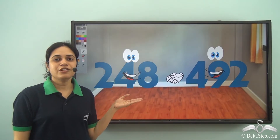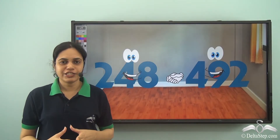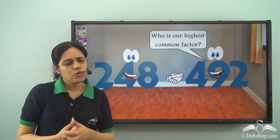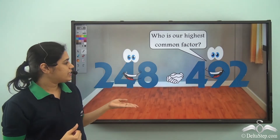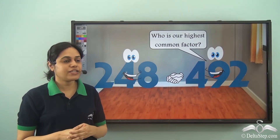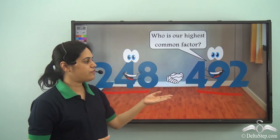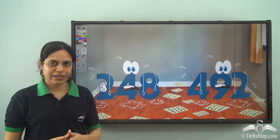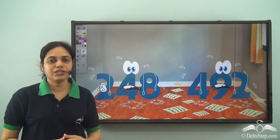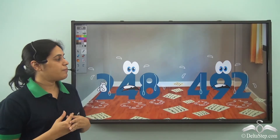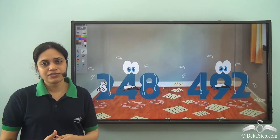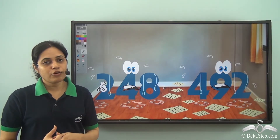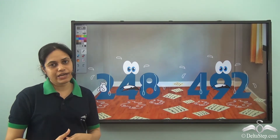One day, two numbers 248 and 492 were playing with each other. It occurred to them that they wanted to find out their highest common factor — the HCF of 248 and 492. So they started finding their prime factors using the prime factorization method, but they were really very tired because they had lots of prime factors. So they wanted to find some other way to calculate their HCF.